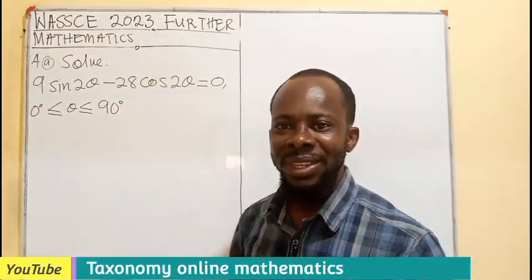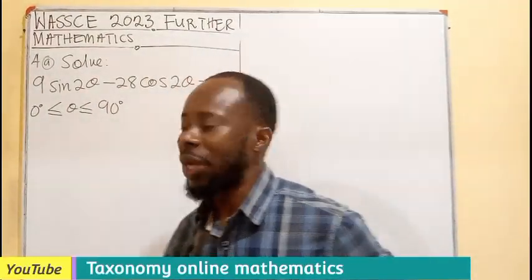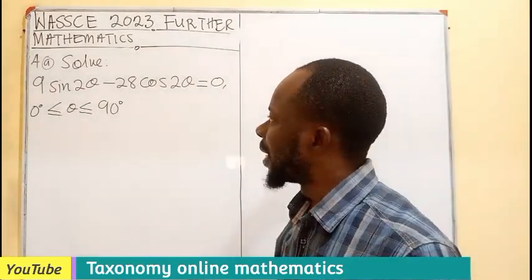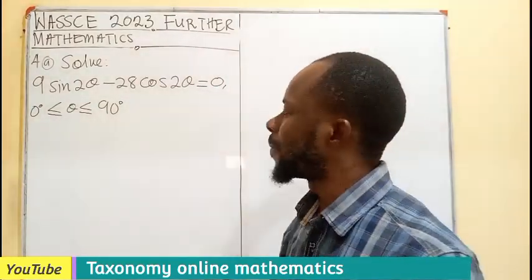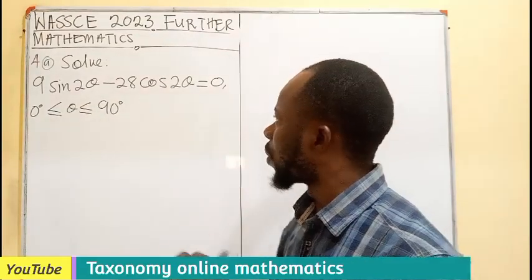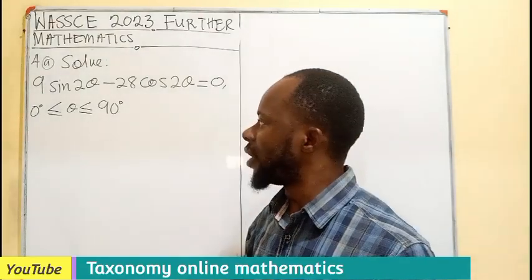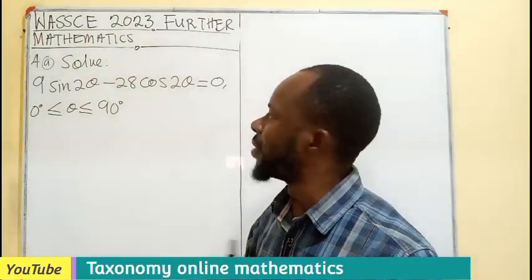Welcome, WAC2023 Further Mathematics, question number 4a. It's on trigonometry: 9 sin 2 theta minus 28 cos 2 theta equals 0, where theta is ranging between 0 and 90 degrees.